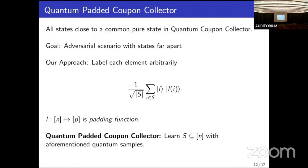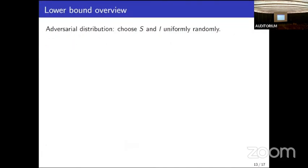Moving on to the lower bound overview: we want to show that the classical coupon collector lower bound also holds here. As usual, we consider an adversarial distribution over the input — we choose the subset S and the padding function l uniformly at random.